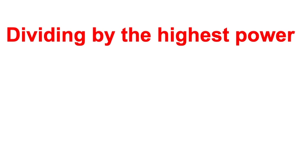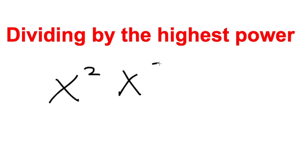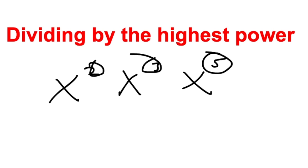Our fourth rule is dividing by the highest power. If plugging in doesn't work, nor multiplying by the conjugate, nor factoring, our fourth rule is to divide by the highest power — such as x squared, x cubed, or x to the 5th. The highest power in the equation is what we divide by.